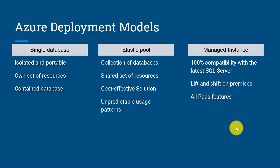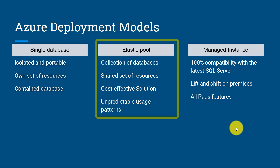Now in this module, we are more focusing on the Elastic Pool. Elastic Pool is a collection of databases — a group of two or more databases with a shared set of resources at a fixed price. It is a cost-effective solution. If you have an unpredictable usage demand, then you can go with the elastic pool, and we are going to understand this in the upcoming slide.